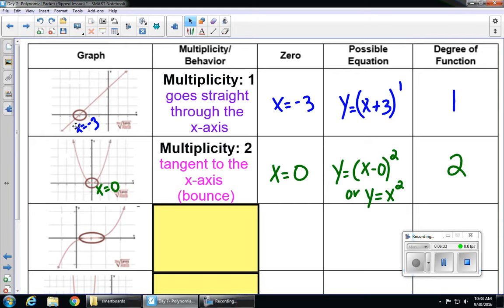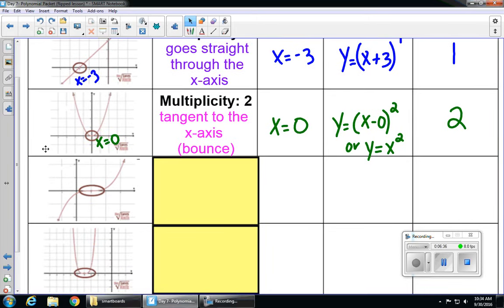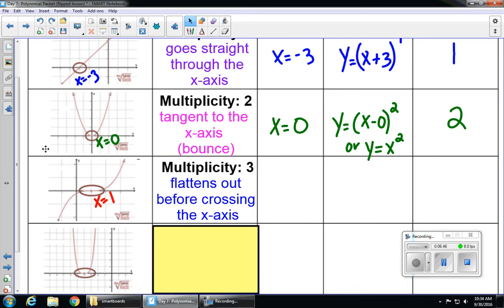If we take a look at our third graph, this graph crosses over the x-axis at x equals 1. So let's label that. And this is what we know as a multiplicity 3. It flattens out before it crosses the x-axis. So unlike the first picture, it doesn't go straight through. It kind of squiggles through.